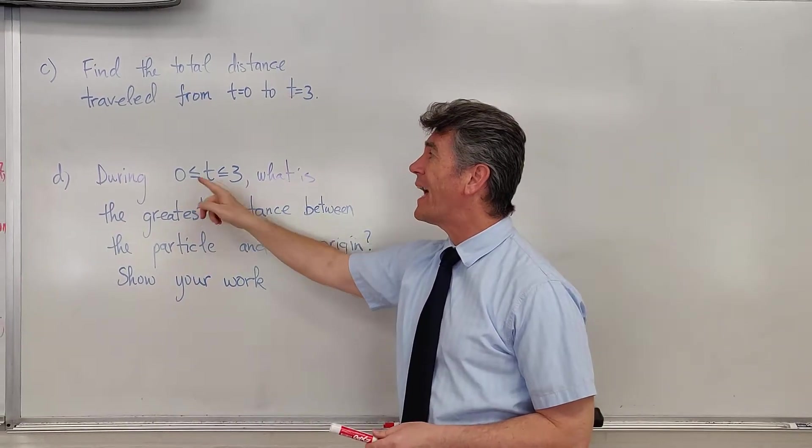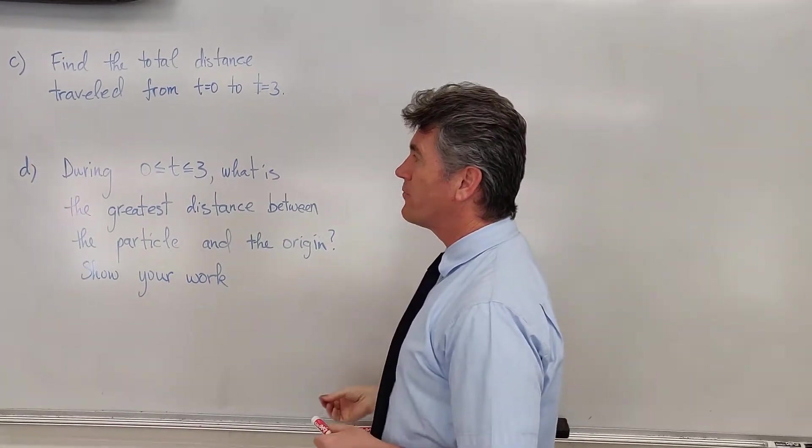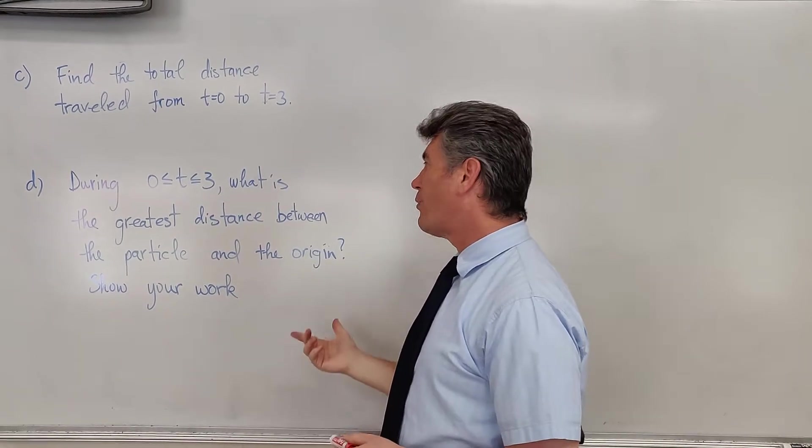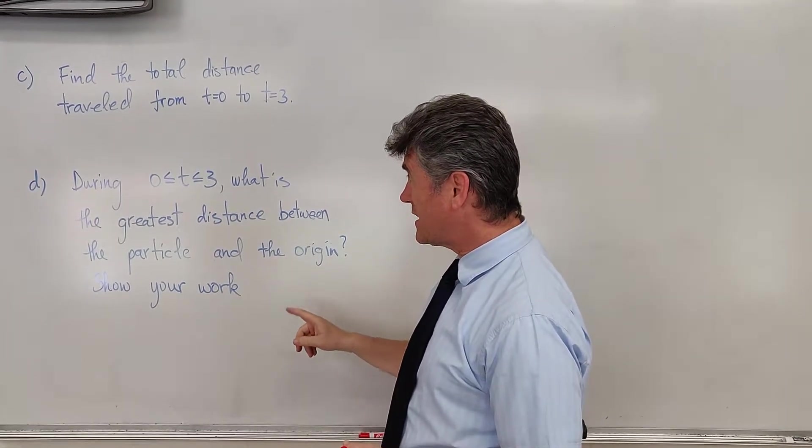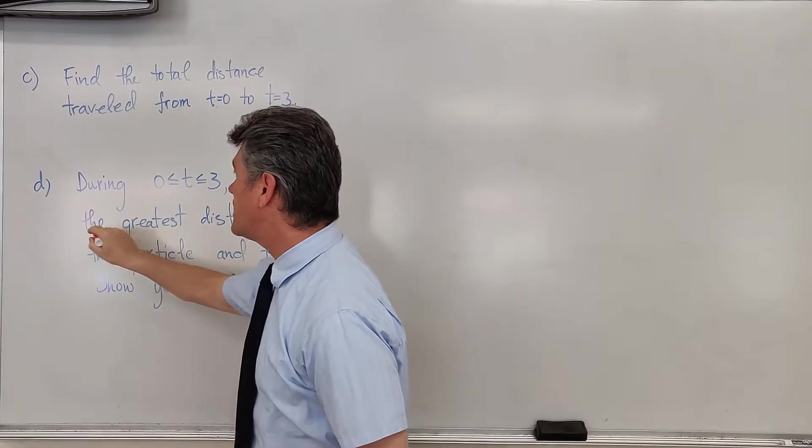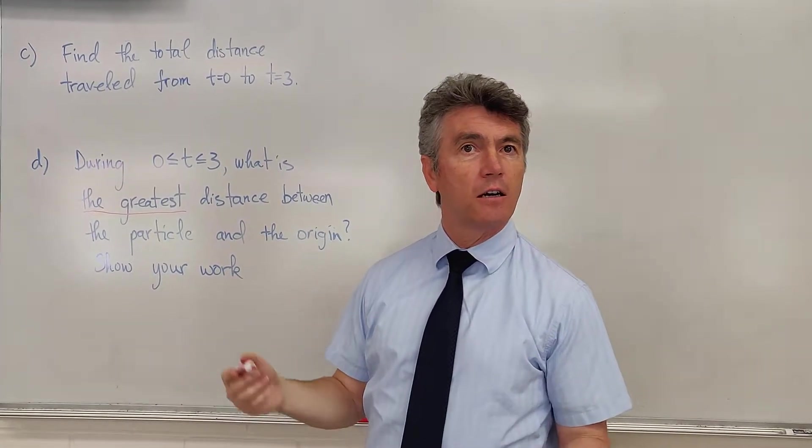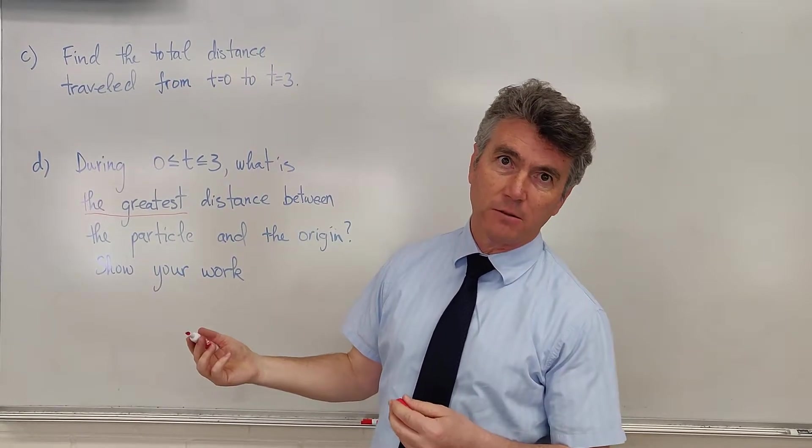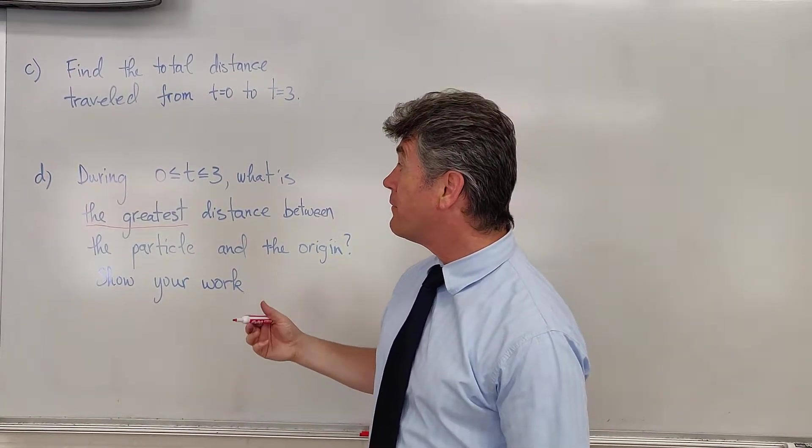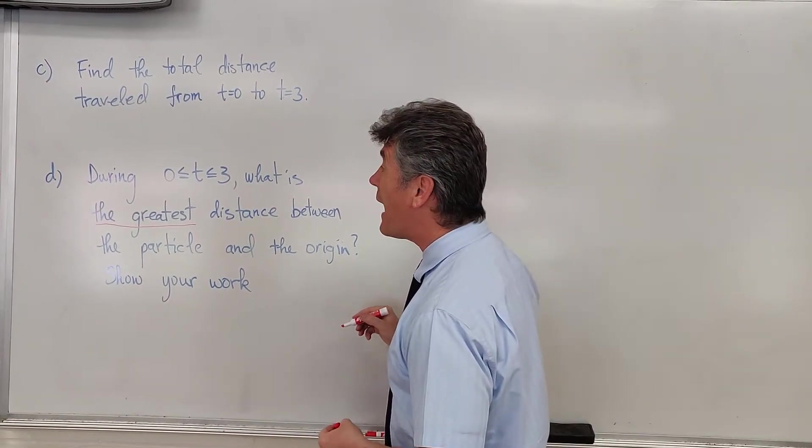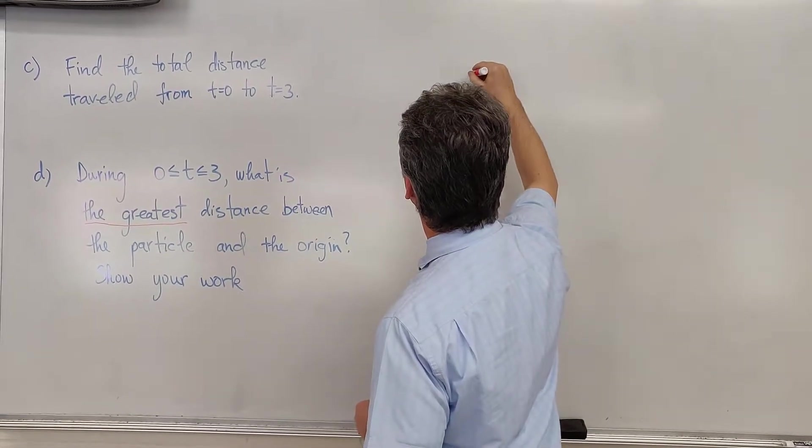So what do we notice? One, we notice that we have a closed interval, and that's important. The next thing that we notice is that we want to find the greatest. The greatest means the absolute max or absolute min. So we have to review, how do we find an absolute max or an absolute min?